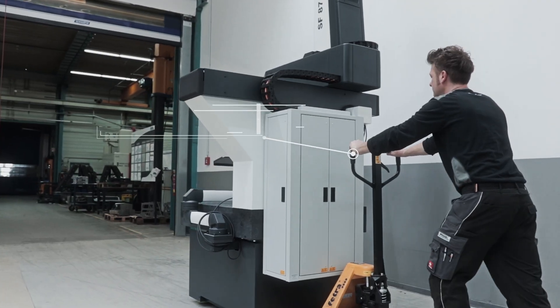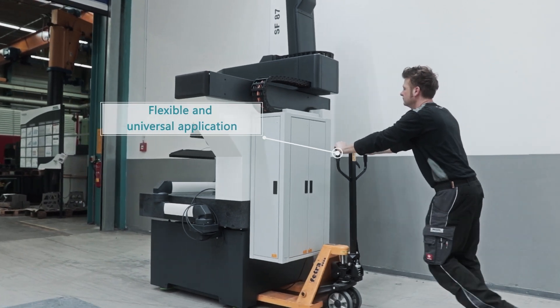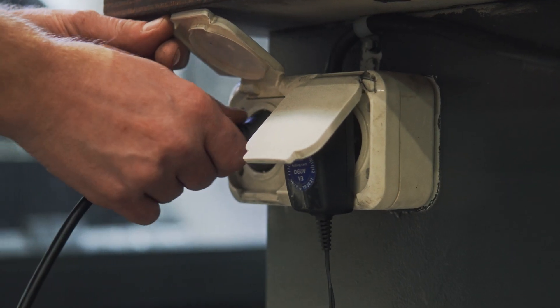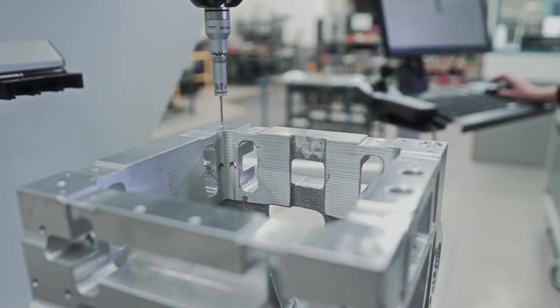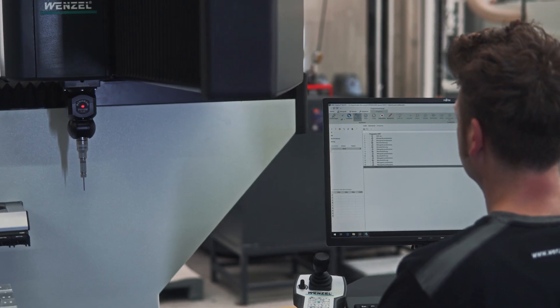The SF87 is easy to transport and only a standard electrical socket and no compressed air is required to connect the machine. It is therefore always available for flexible use in the production environment.